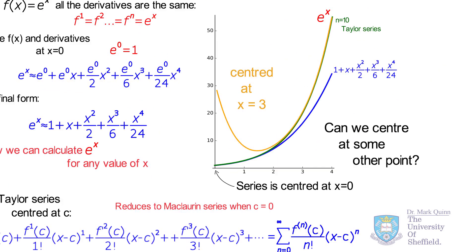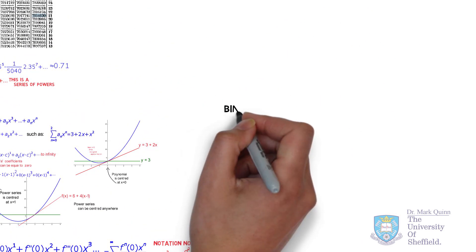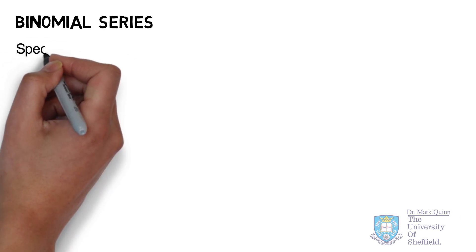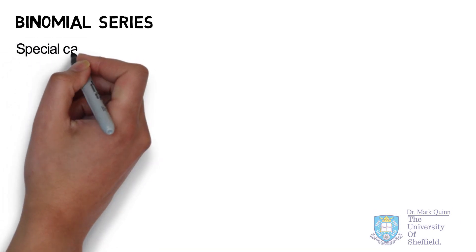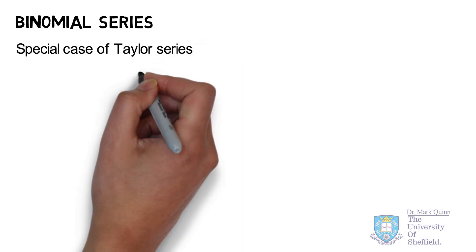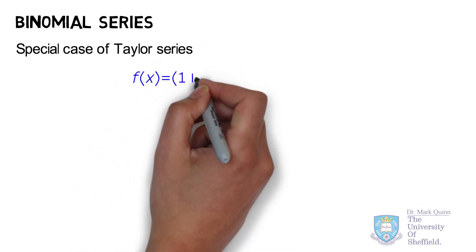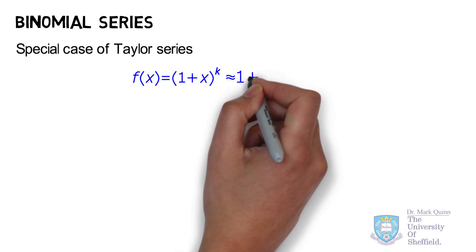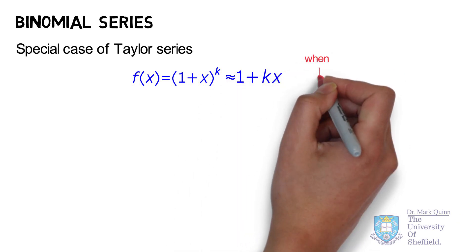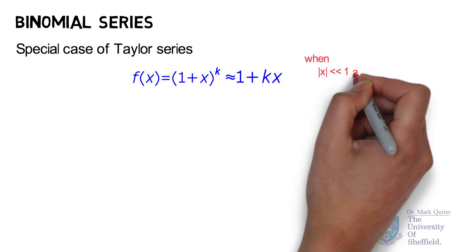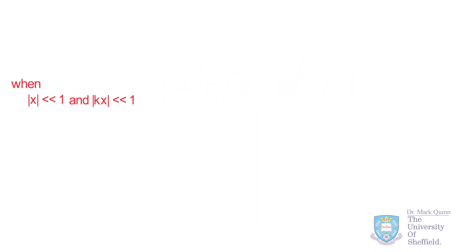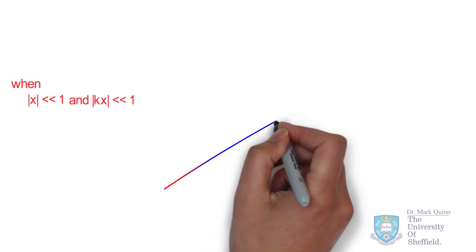A special case of a Taylor series is the binomial expansion. A binomial contains two terms such as (a + b) all raised to the power of k. If a equals 1 and b equals x, the binomial takes the form of (1 + x) raised to the power of k. The simple binomial approximation is 1 + kx, and this is valid when x is less than 1 and kx is also less than 1.